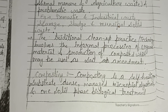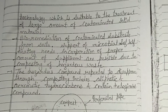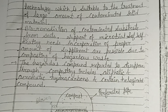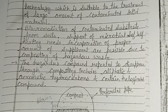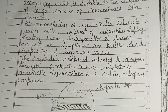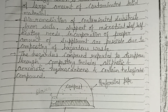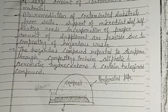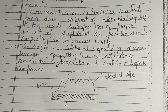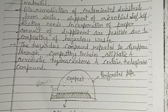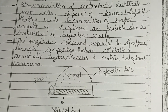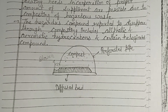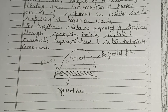Composting is a self-heating, substrate-dense, managed microbial system and a solid phase biological treatment technology suitable for treating large amounts of contaminated solid material. Bioremediation of the contaminated substrate from soil is supported by the microbial self-heating process, and proper supplements are incorporated. Hazardous compounds that disappear through composting include aliphatic and aromatic hydrocarbons and certain halogenated compounds.